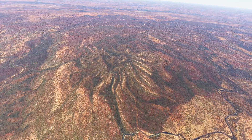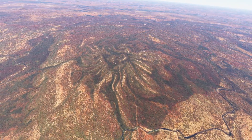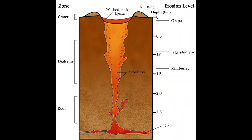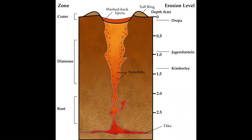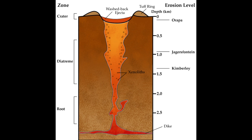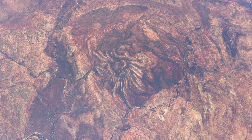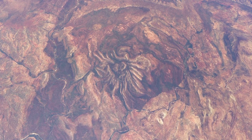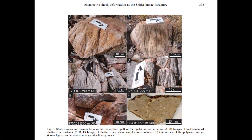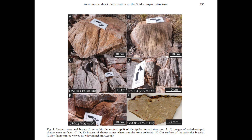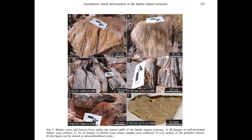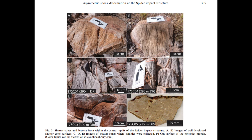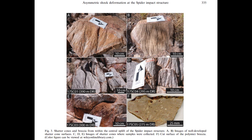It wasn't until the 1970s that the structure began to attract serious attention. Originally it was suggested that it could be a diatreme, a volcanic pipe formed by explosive volcanic activity. This hypothesis led to further fieldwork, including visits by researchers from BHP in 1977. The discovery of shatter cones — distinctive conical fractures in rock typically associated with impact events — provided the first strong evidence that the Spider Structure was not volcanic, but rather the result of a meteorite impact.